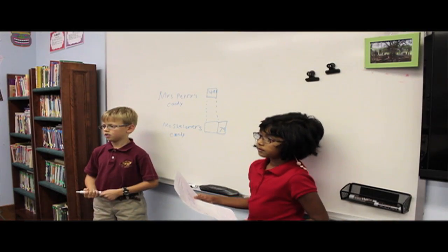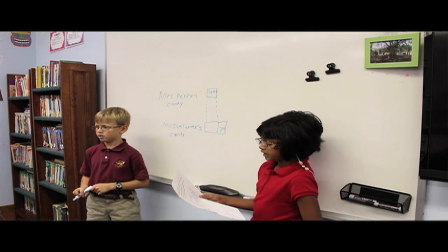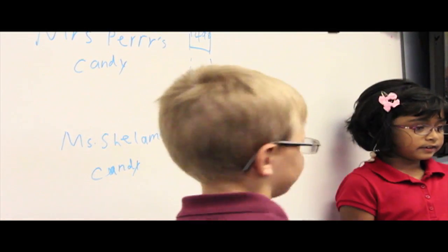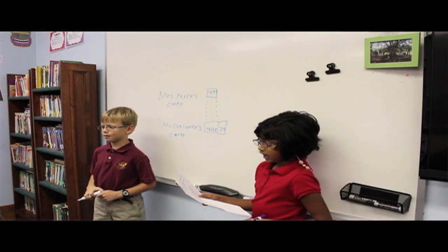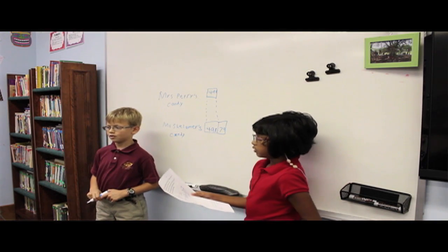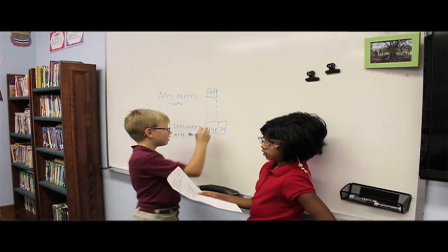Since the boxes are equal, 498 goes in both boxes. Now we read the question sentence. How many pieces of candy does Mrs. Shalmar have? So we put the question mark on top of her box.